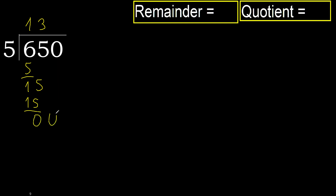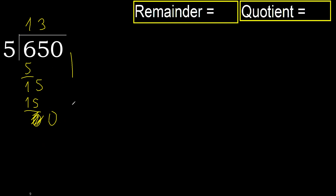Next, bring down the 0. 0 is less than 5, therefore the next digit is 0. That is not a number to divide further, so we finish here. Complete — always complete with 0. The answer is complete with this number.